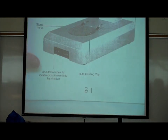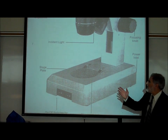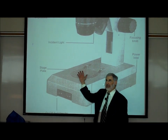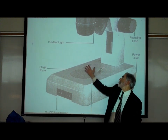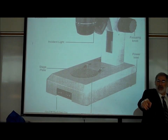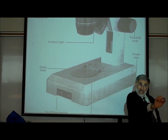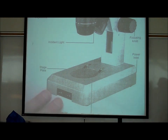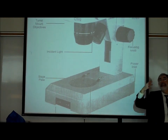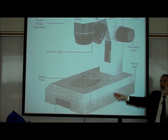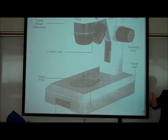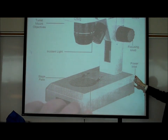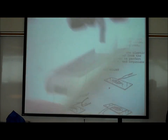Why would you use the dissecting microscope? Because you can look at larger objects — even your own hand or fingers. Your compound microscope can only accommodate things small enough to fit on the stage. The dissecting scope offers lower magnification but allows you to look at insects, earthworms, and similar specimens.